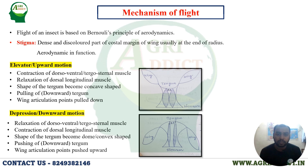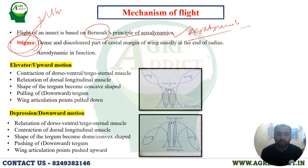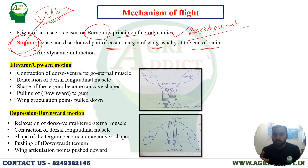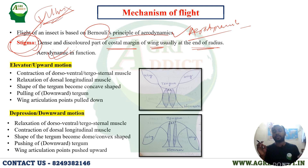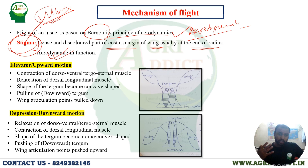The mechanism of flight is based on Bernoulli's principle of aerodynamics. The stigma is a very important structure — it is a dense, discolored part of the costal margin of the wing, usually ending at the radius. The function of the stigma is aerodynamic. The flight is primarily based on Bernoulli's principle, and the stigma is responsible for the aerodynamic function.